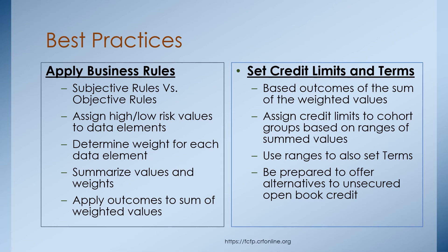The next step is to apply business rules. Based on your evaluation, set up rules that will make decisions for you — whether on paper, in an Excel spreadsheet, or in more sophisticated third-party software. There are both subjective rules you create on your own and more objective rules using third-party data like scores. Assign high and low values to your data elements, determine a weight for each element, summarize the weighted values, and then apply outcomes to the sum of the weighted values. You've done your evaluation, applied values and percentages, and from the summarization of weighted values you derive outcomes.